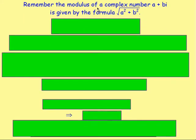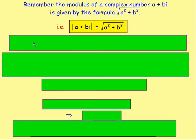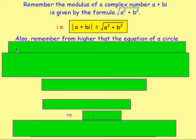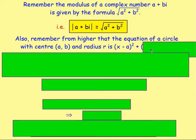Remember, the modulus of a complex number a + bi is given by this formula. If you think about plotting it with an Argand diagram, you would plot the point (a, b) and the distance from that point from the origin would be given using Pythagoras — so it's the square root of a squared plus b squared. Also remember from Higher the equation of a circle with centre (a, b) and radius r: it would be (x − a)² + (y − b)² = r².